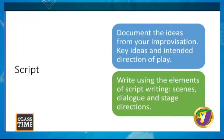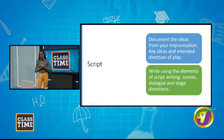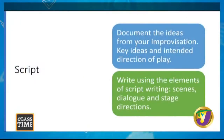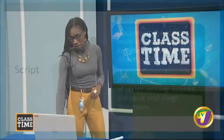Then you move on to scripts. Having done your improvisation, you have a set of information to pull on — dialogue, a range of actions. You need to make sure you're consistent; without a script, each time you do the presentation you'll do something differently. Your script documents the key ideas that came out of improvisation to show the intended direction of the play. Use basic script elements: scenes (scene one, two, three), direct dialogue, and stage directions — which tell people exactly what you're expected to do.